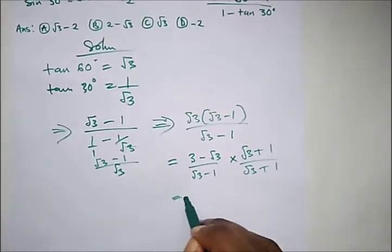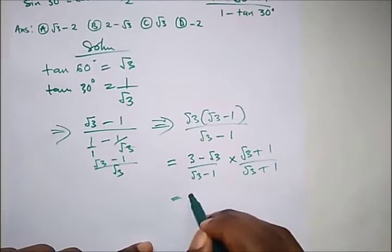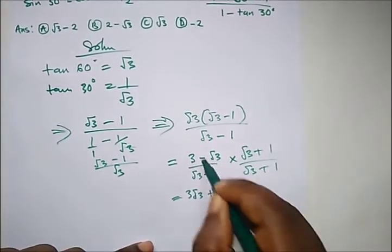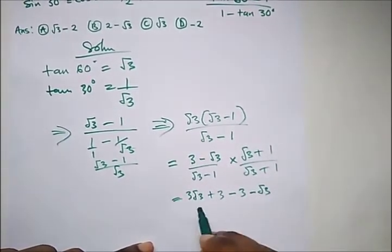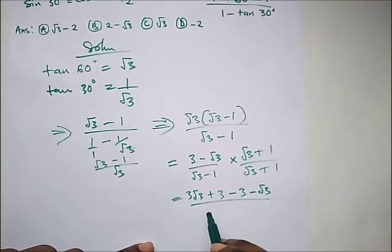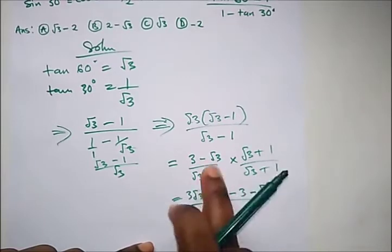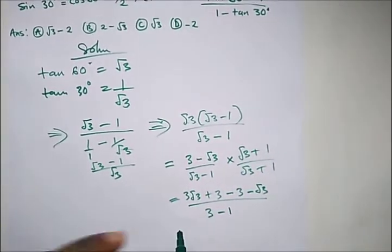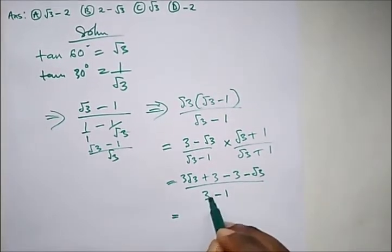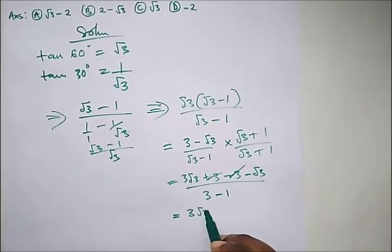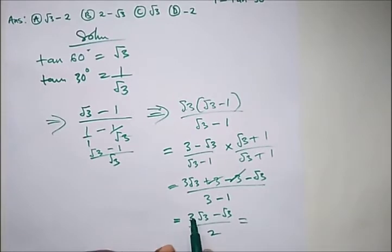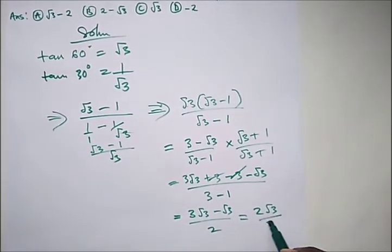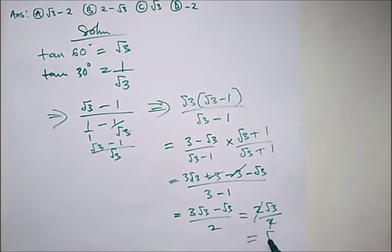Expanding the brackets we get: 3 root 3 plus 3, minus 3, minus root 3, all over 3 minus 1. Using the difference of squares, the denominator is 3 minus 1, which is 2. The 3 and minus 3 cancel, leaving 3 root 3 minus root 3 over 2, which gives 2 root 3 over 2. Canceling, we get root 3. So the answer is root 3, which is option C.